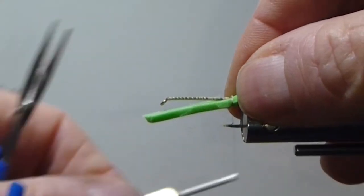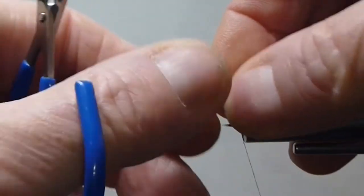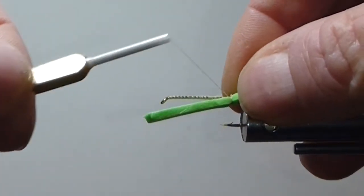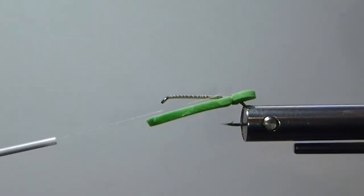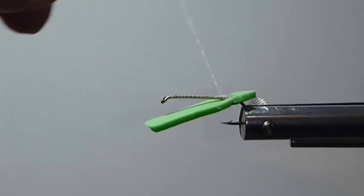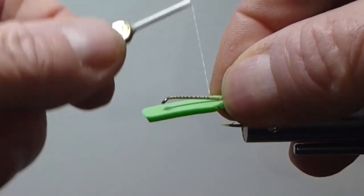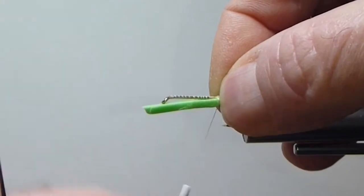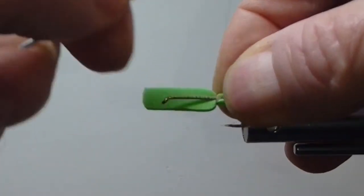Okay, and then when I'm using some six-aught tan thread here, I can lean on it pretty good. Now, we'll get to the top of the shank again. I'm just going to run my thread to the next segment. And then I can pinch that on like so. It gives me a nice segment.